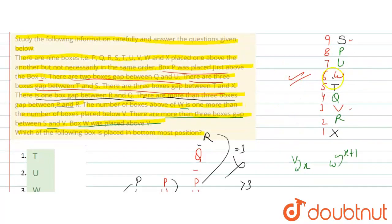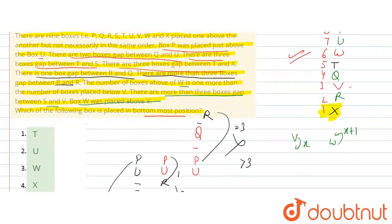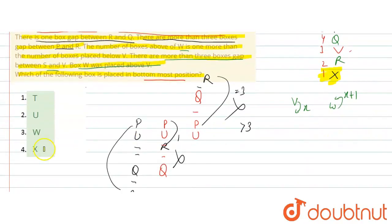The question asks: which of the following boxes is placed at the bottom-most position? The box at the bottom-most position is X, which is option number 4. So option number 4, X, is the correct answer.